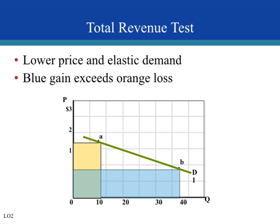A rule of thumb: the flatter the demand curve is, the more elastic demand is. When we looked at perfectly elastic demand, it was a horizontal demand curve, and perfectly inelastic demand was vertical. So the flatter the demand curve, the more elastic; the steeper the demand curve, the more inelastic. Here we have a pretty flat demand curve, so demand is elastic. A change in price from $2 to $1 causes quantity to go from 10 units to 40 units.